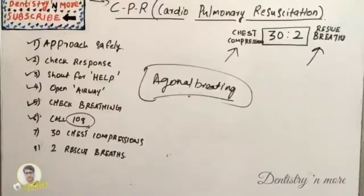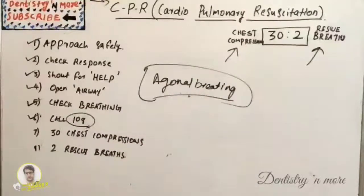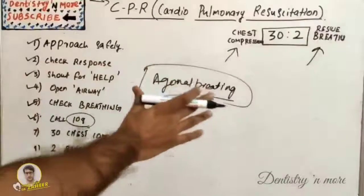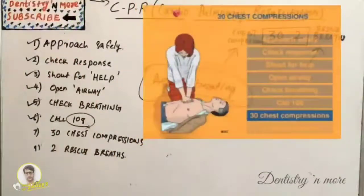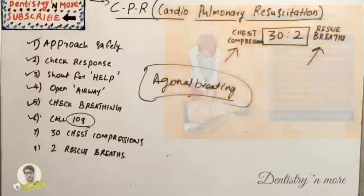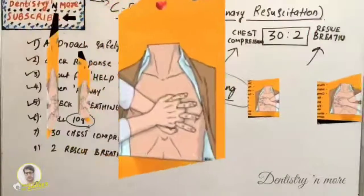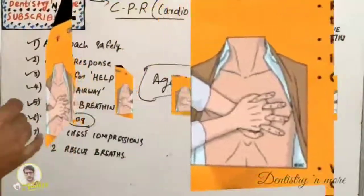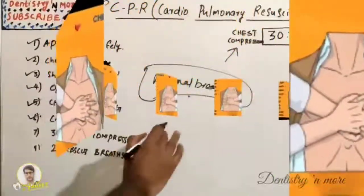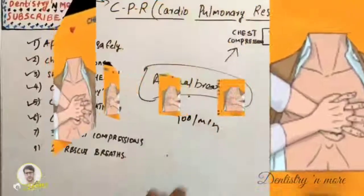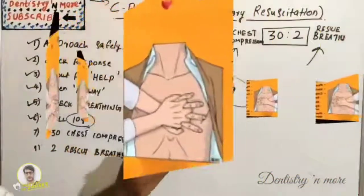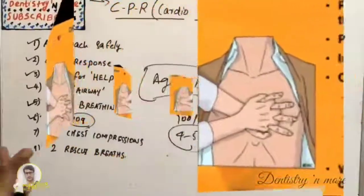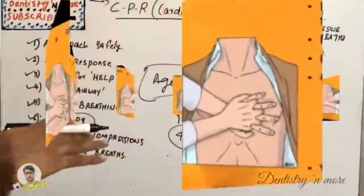Once we call for an ambulance, we start chest compressions — 30 chest compressions followed by 2 rescue breaths is the sequence. To perform chest compression: place the heel of one hand in the center of the chest on the sternum — the midbone in the middle of the chest — then place the other hand on top and interlock the fingers. Compress the chest at a rate of 100 per minute to a depth of 4 to 5 centimeters. We should do equal compression and relaxation: push, relax, push, relax.